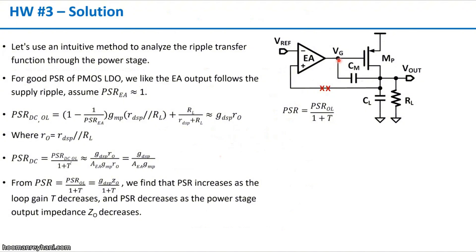Like we mentioned in the course, for PMOS LDO, we want the gate follows the input ripple, such that we can have a relatively constant current through this power transistor. So to select the EA topology, we want the PSR of the EA will be approximately 1, which means the EA output follows the input ripple.